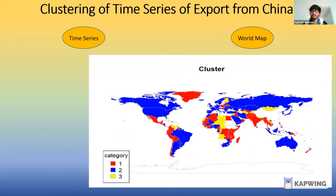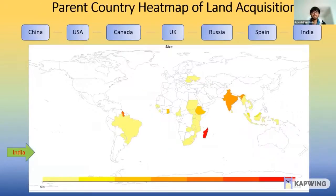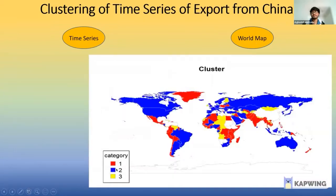Question from audience: In category 2, you have the US as well as Brazil, Australia, and some countries in Africa — what do you make of that? What is the clustering really saying? Response: This clustering specifically shows how the export from China progresses over time, not the exact amount of export. So USA and Brazil being in the same cluster means their export relationship with China follows a similar trend over time. Class 2 means there is a small dip and then an increase — both USA and Brazil show a similar trend in exports from China.